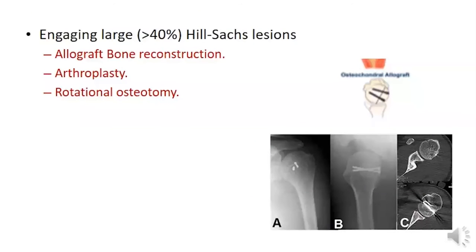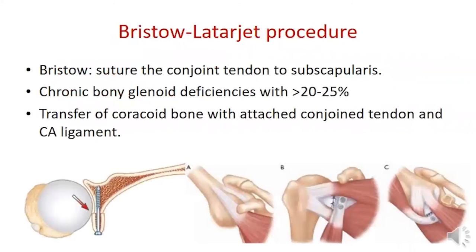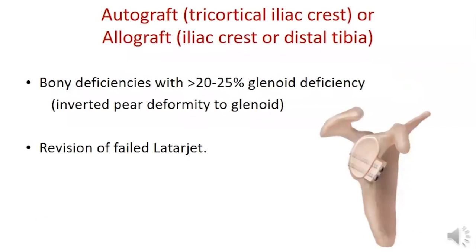A Hill-Sachs lesion larger than 40% is treated by osteochondral allograft arthroplasty or rotational osteotomy. The Latarjet procedure is indicated for chronic bony glenoid deficiency larger than 20-25%, involving transfer of the coracoid bone fixed to the anterior glenoid with two screws to increase the articular arc, with the attached conjoined tendon acting as a dynamic sling. Another option for glenoid deficiency is iliac crest autograft or distal tibia allograft, also used in cases of failed Latarjet.